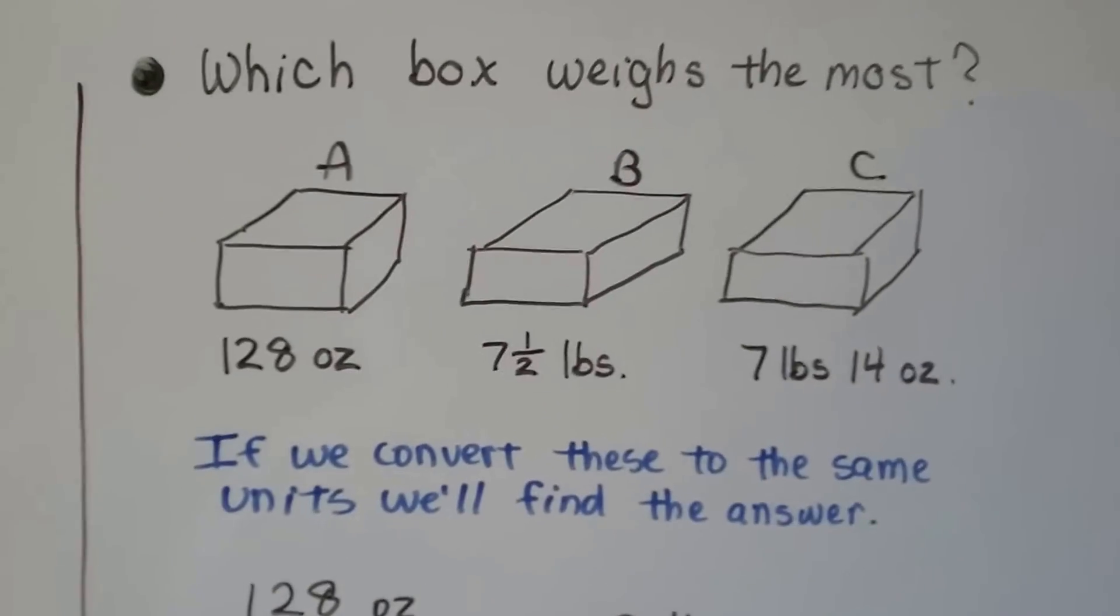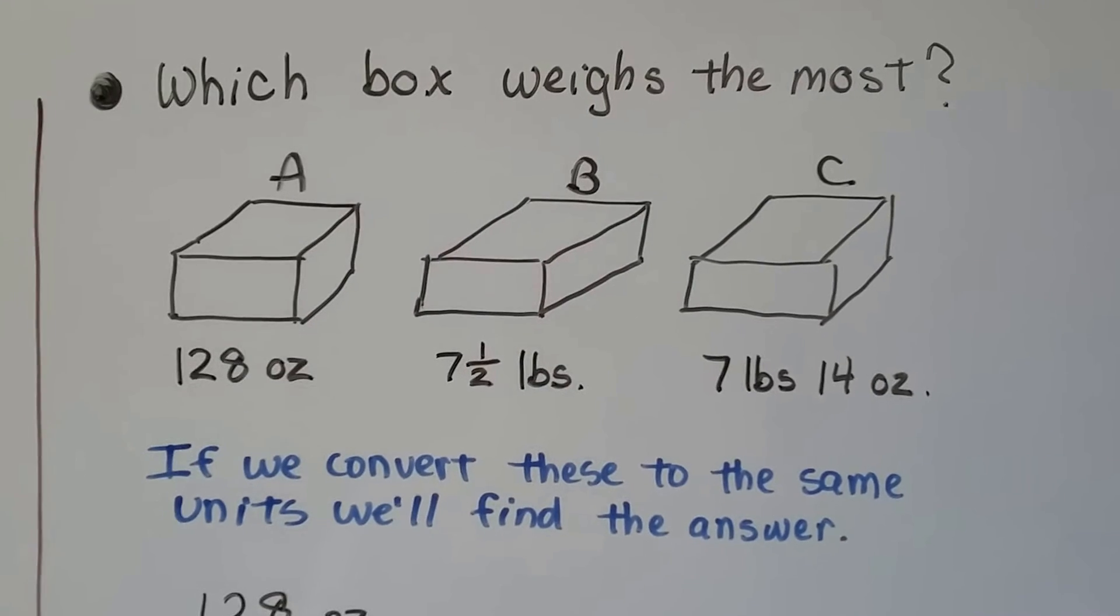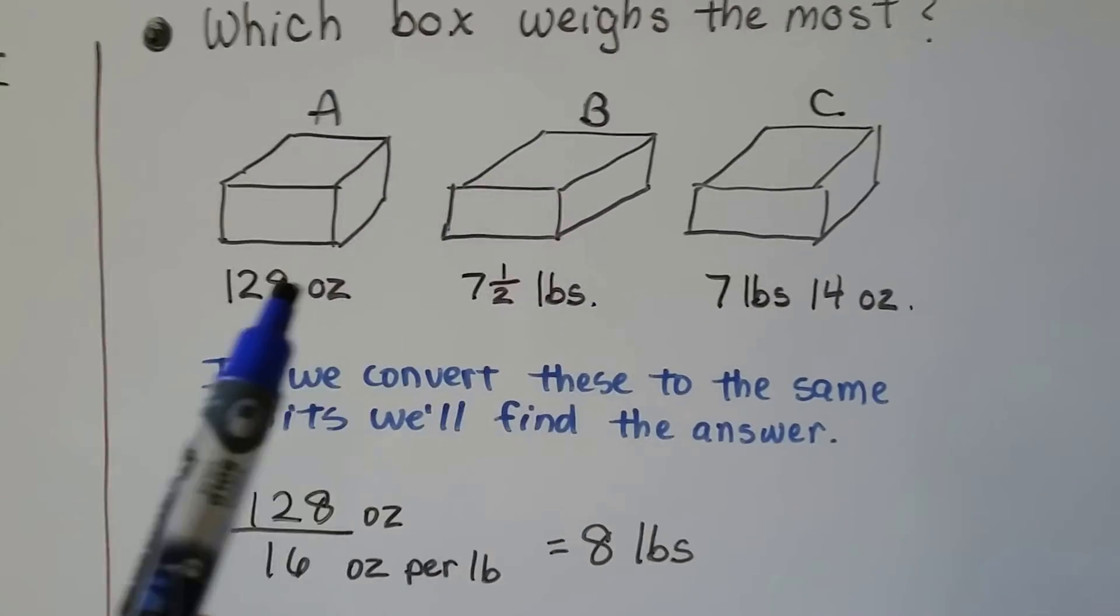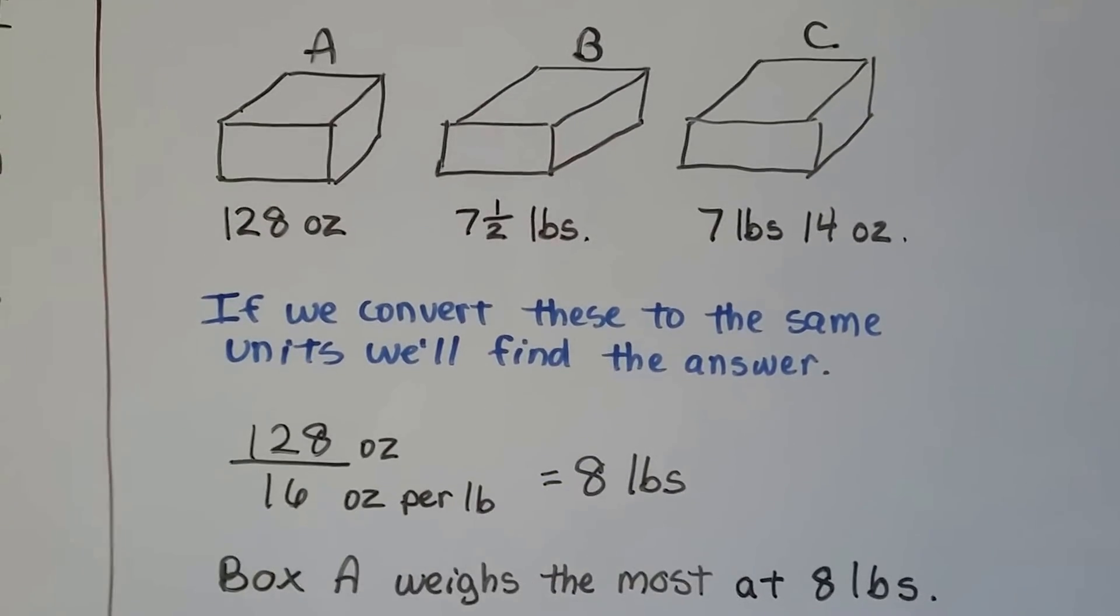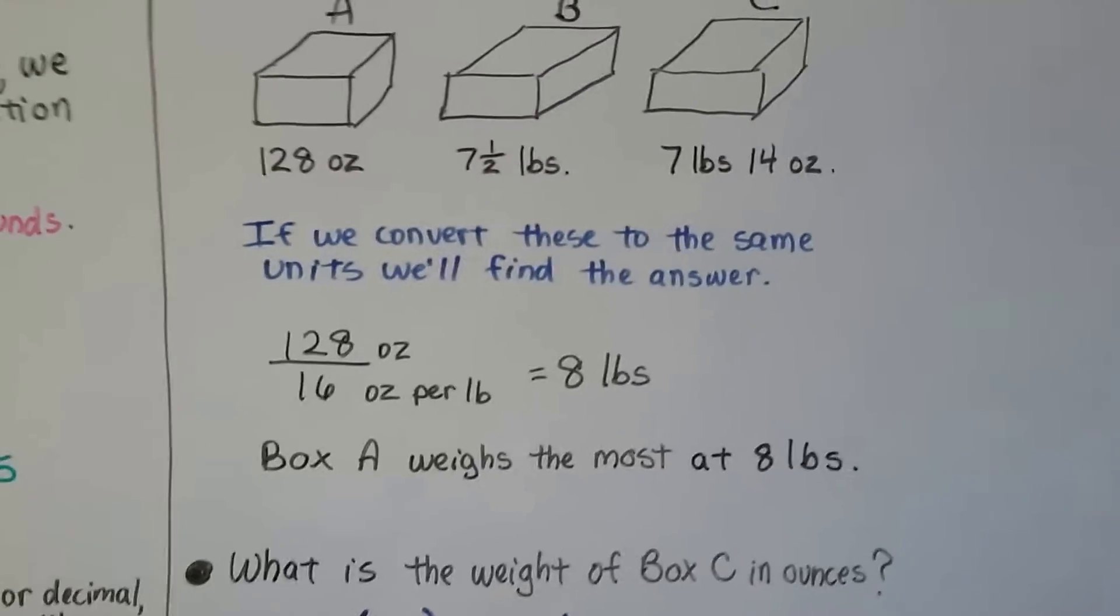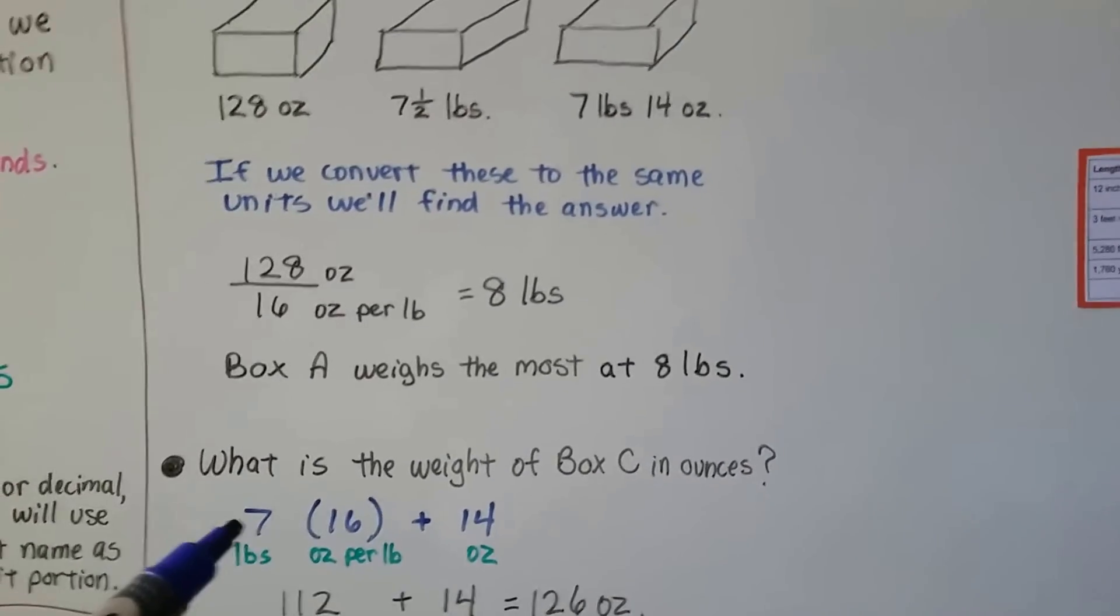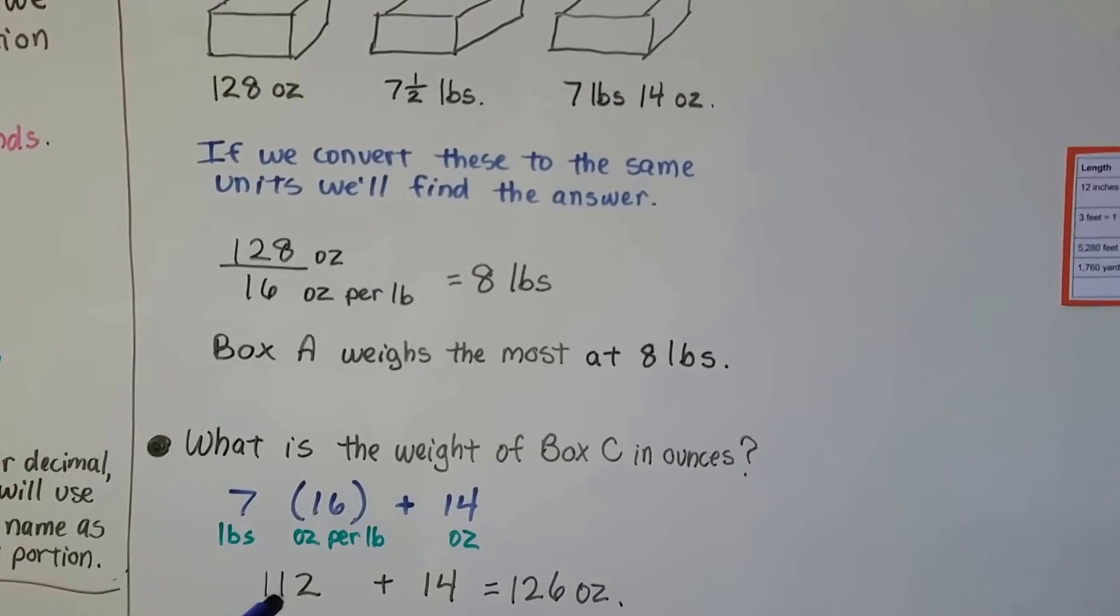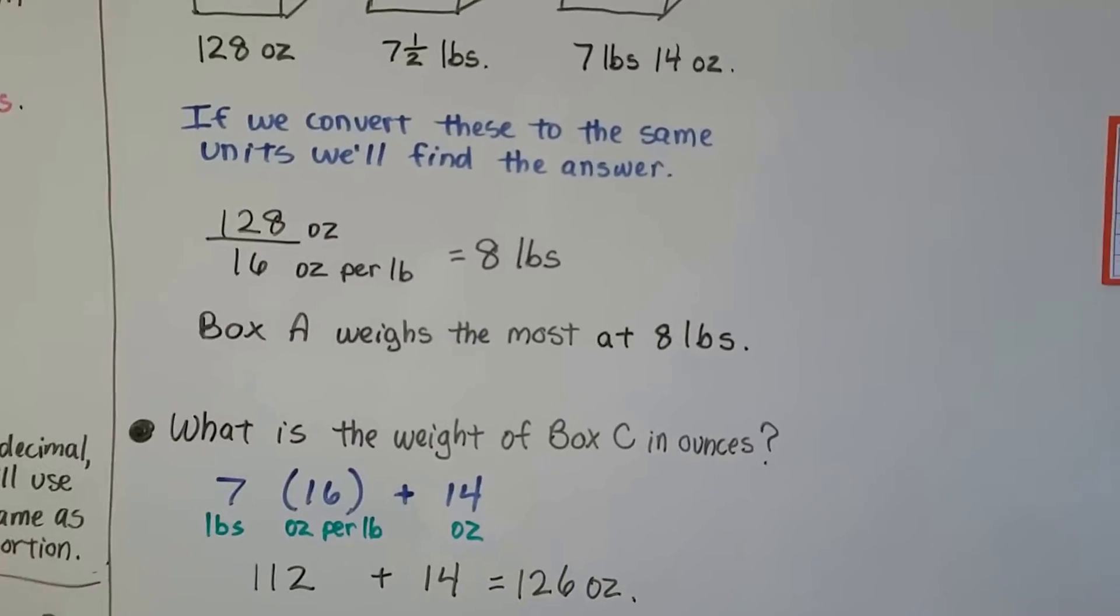It's going to be problems like this. Which box weighs the most? We have box A that's 128 ounces, box B that's 7 1⁄2 pounds, and box C that's 7 pounds 14 ounces. And if we convert these to the same units, we'll find the answer. So because 2 of them say pounds, let's convert that to pounds. There's 16 ounces in 1 pound, so we can divide the 128 by 16. That'll give us 8 pounds. So we know box A weighs the most at 8 pounds. Now it says, what is the weight of box C in ounces? We've got 7 pounds 14 ounces. We've got 7 pounds, and if we multiply it by the 16 ounces per pound, that's going to give us 112 ounces. Now we can add that straggling 14 ounces that's off on the side and get 126 ounces.